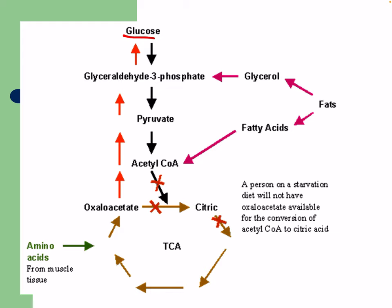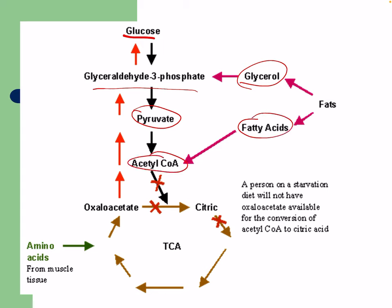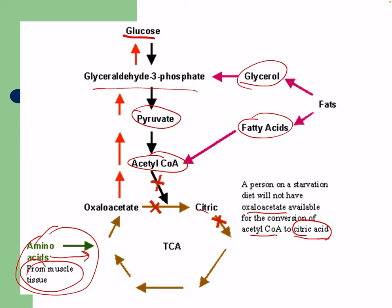Glycerol can become G3P and then pyruvate. Fats can become fatty acids and then acetyl-CoA through fatty acyl-carnitine, which enters the citric acid cycle. Amino acids can also enter the citric acid cycle from muscle tissue, but this happens at a high starvation rate when we break down our own proteins. A person on a starvation diet will not have oxaloacetate available for conversion of acetyl-CoA to enter the citric acid cycle.